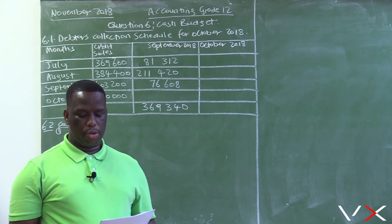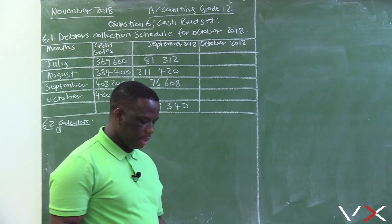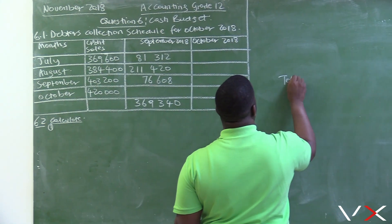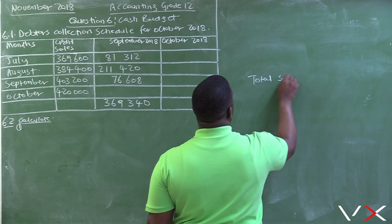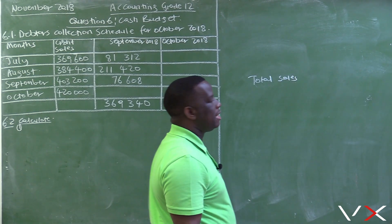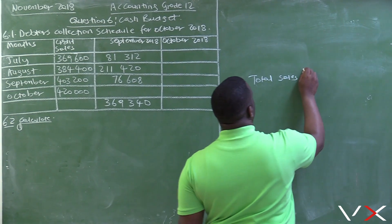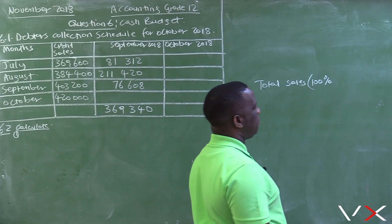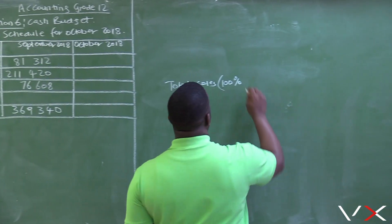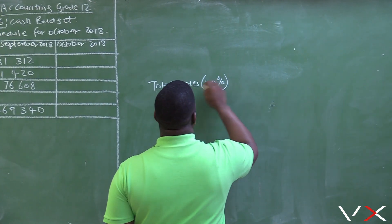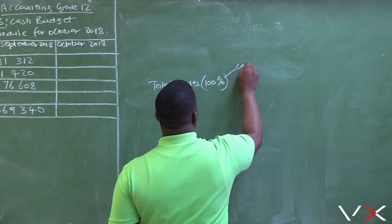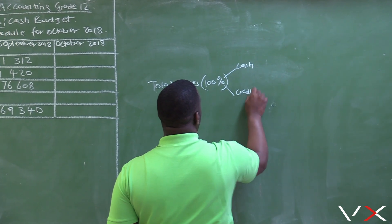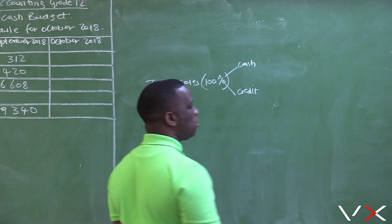In accounting, we have total sales, and total sales is 100 percent. When the business is selling, out of the total sales we have cash sales and credit sales. The total sales are divided into two for most businesses.